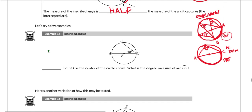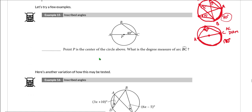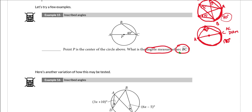Let's look at example 15. If you're feeling confident, pause the video and try it on your own. Point P is the center of the circle. What is the degree measure of arc BC? We need the degree measure of arc BC — that arc right here.